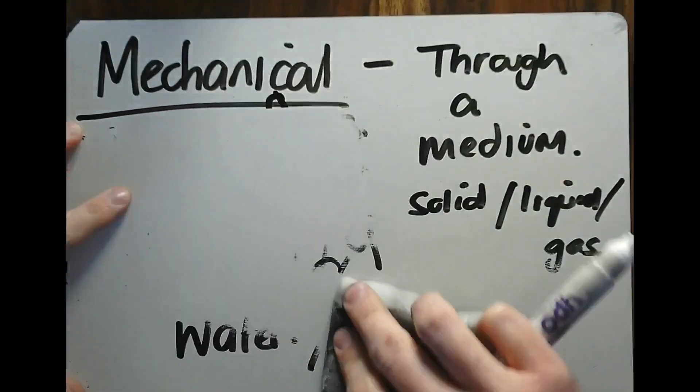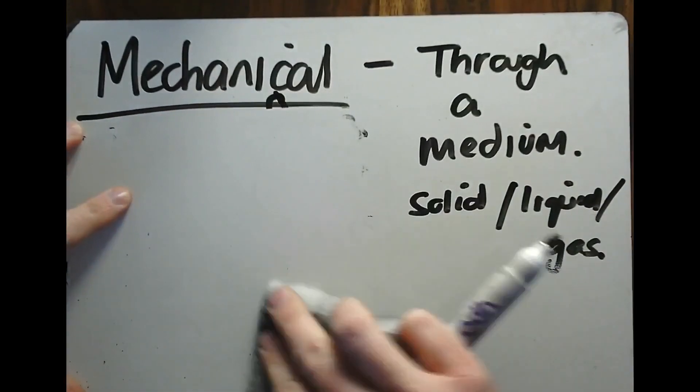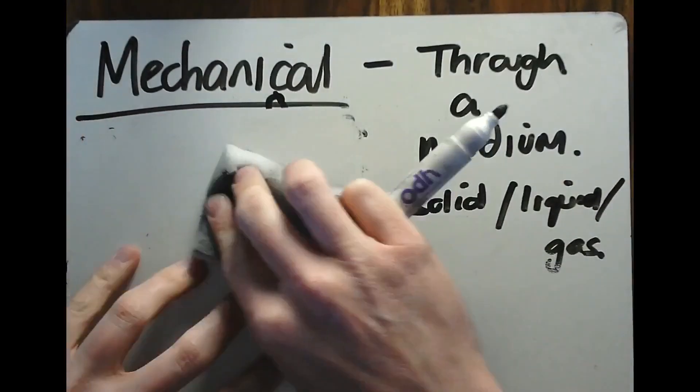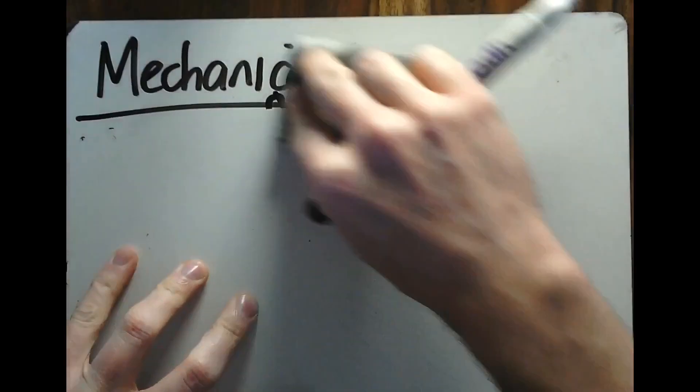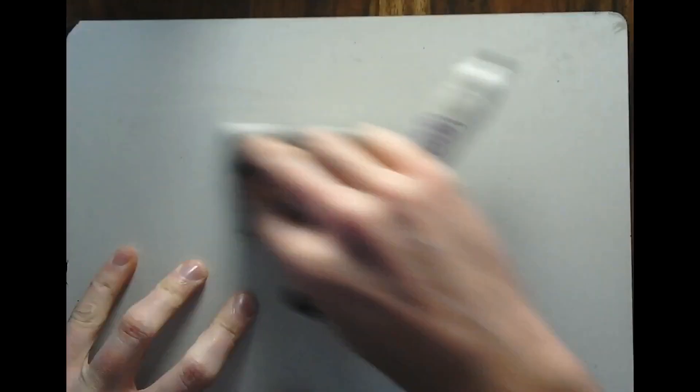Another example of a mechanical wave is earthquakes. Earthquakes work on exactly the same principle, but I'm not going to try to draw an earthquake.